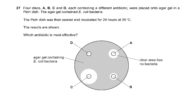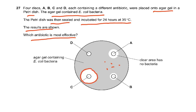Question 27: Four discs A, B, C and D each containing a different antibiotic were placed onto agar gel in a petri dish. The agar gel contained E. coli bacteria. The petri dish was then sealed and incubated for 24 hours at 35 degrees celsius. Which antibiotic is most effective? We are seeing which has the biggest clear area. This antibiotic has diffused out and has given you a very large clear area. The answer is C because this is the most effective antibiotic.